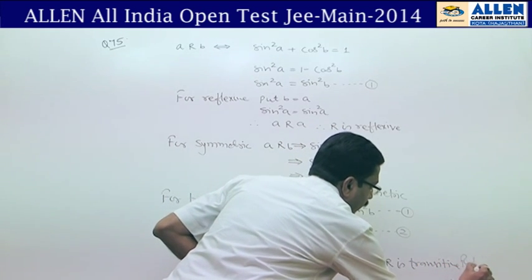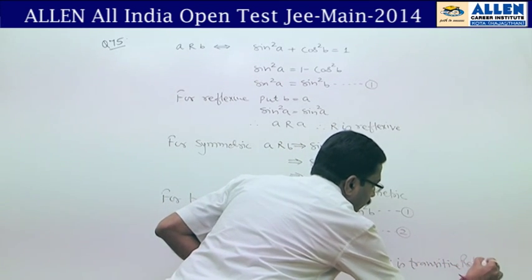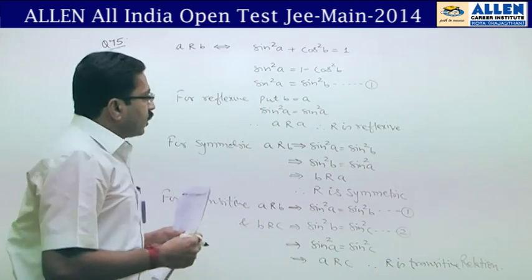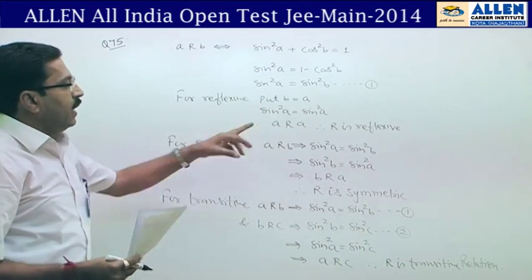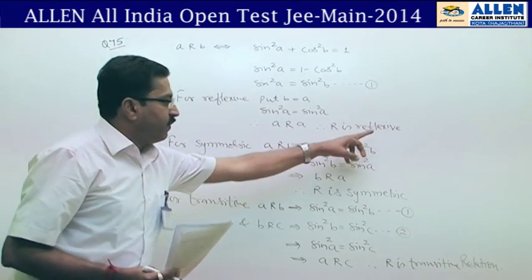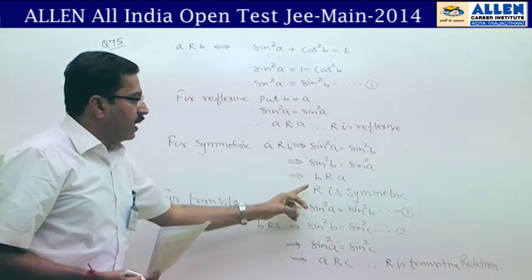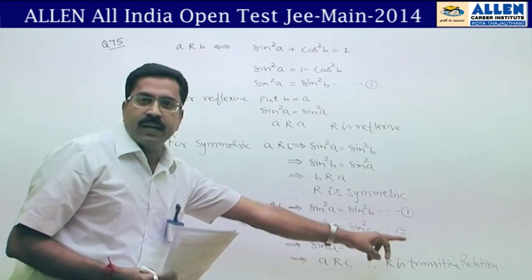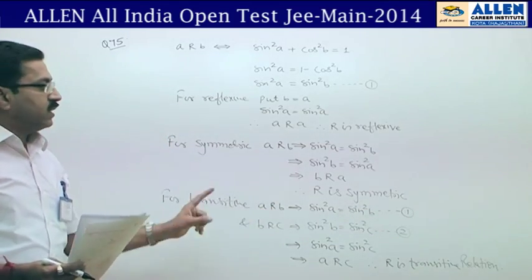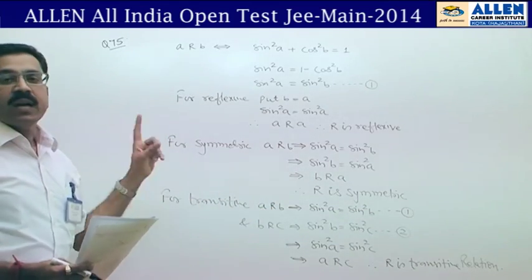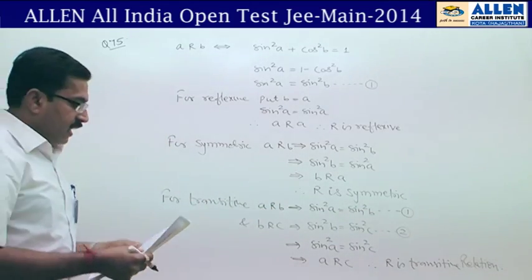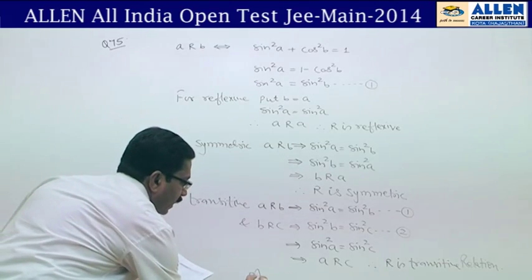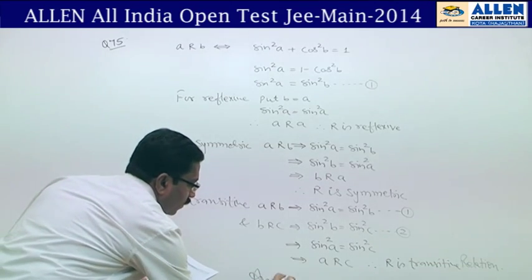Therefore R is transitive. In total, R is reflexive, R is symmetric, R is transitive. Therefore this relation is an equivalence relation. Answer is 4.